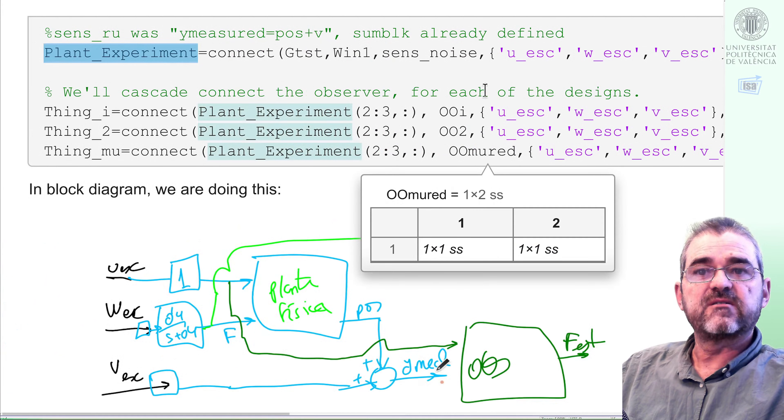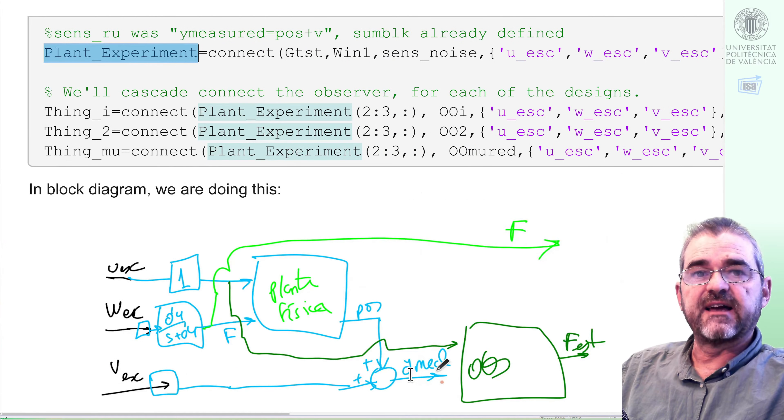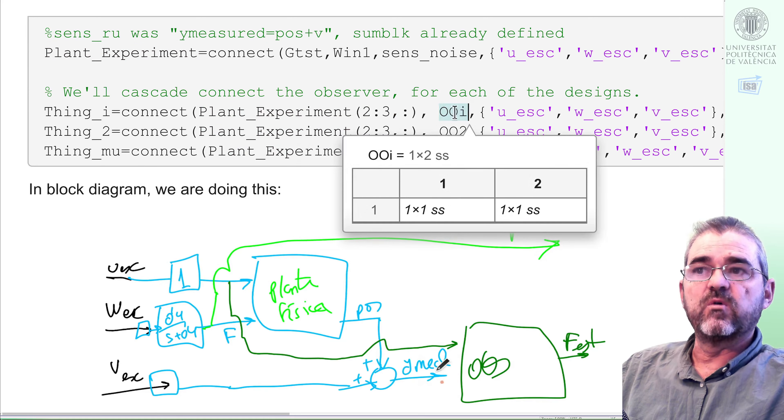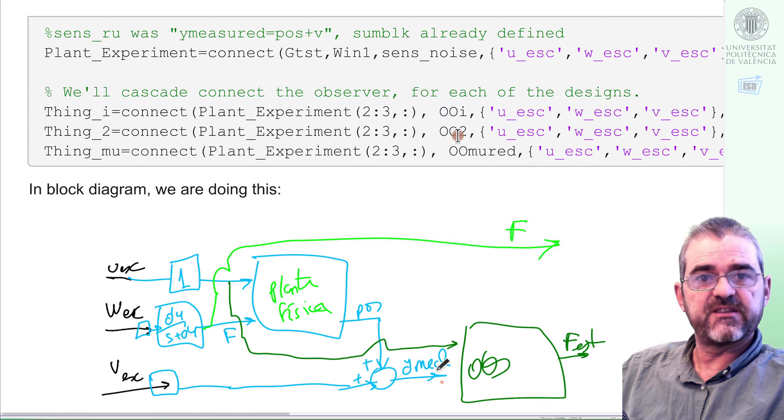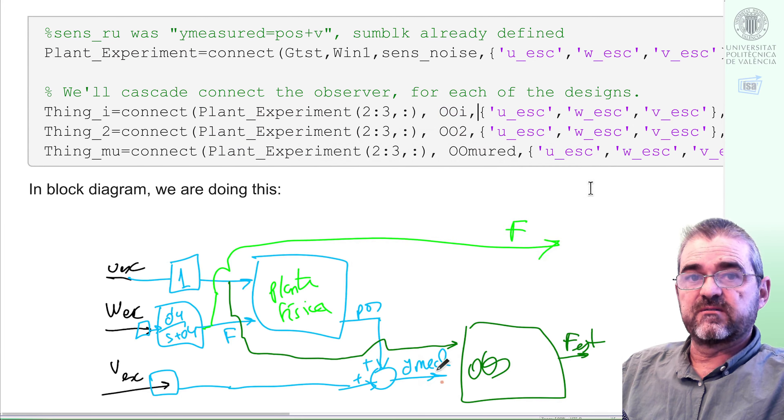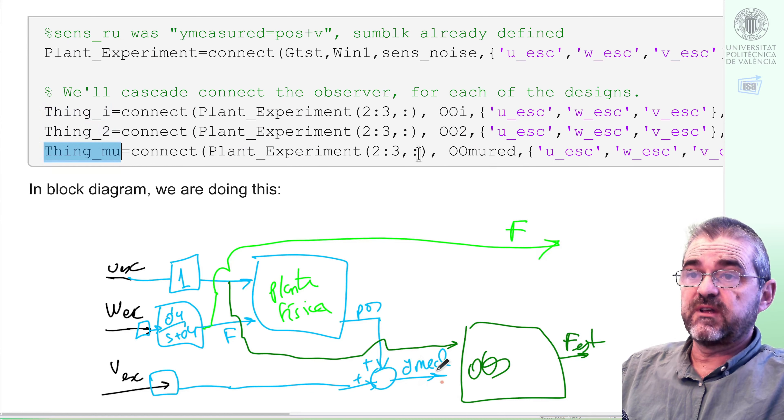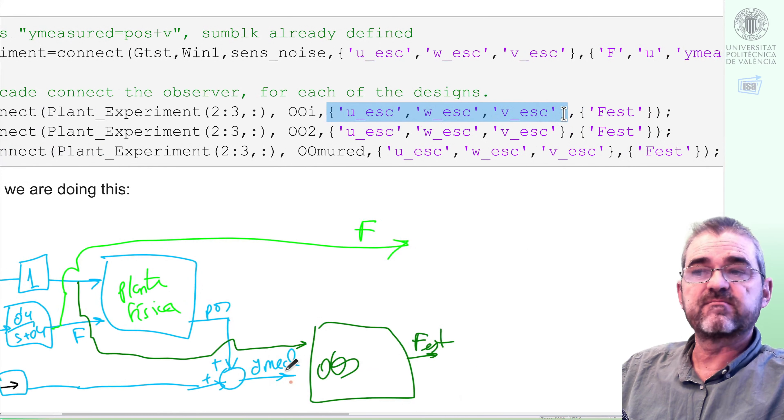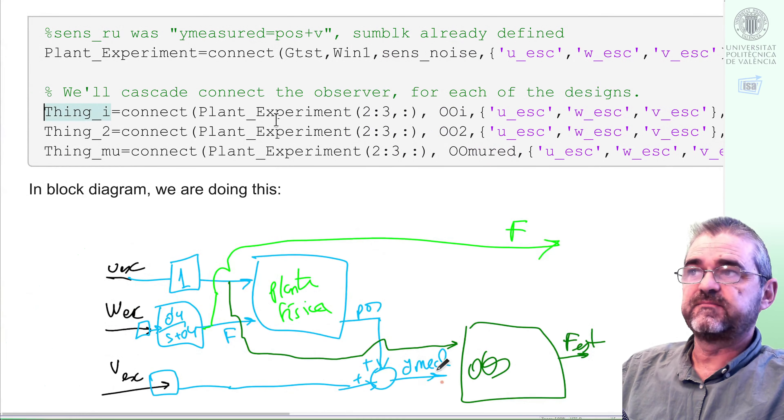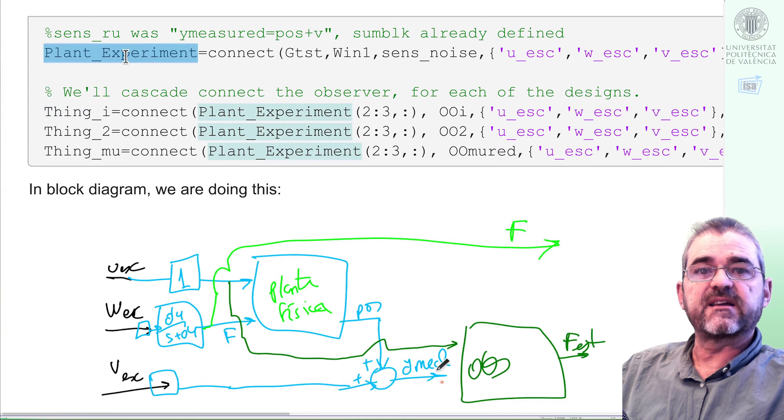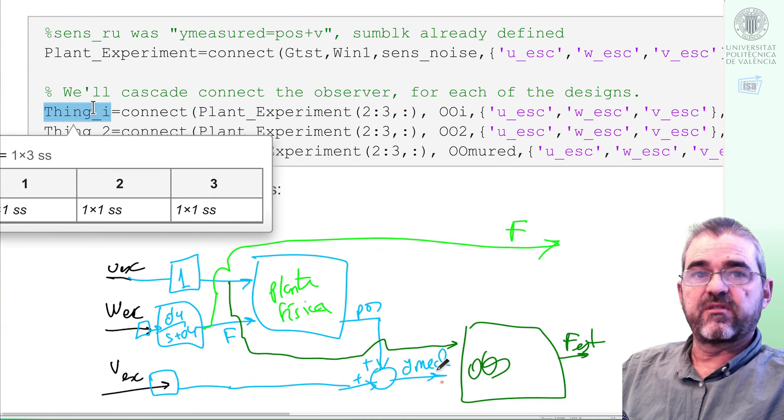Then, this plant experiment object is sort of the cyan lines in this block diagram, and then if we connect that plant experiment stuff, second and third outputs, with the observers OOI H infinity, OO2 H2, and OO mu red, the mu synthesis observer after order reduction to order 6, well, the things that we have thing i, thing 2, and thing mu, whose inputs will be the same three inputs, and the output will be the estimated force. So we need to compare the first output of plant experiment with the only output of thing whatever.